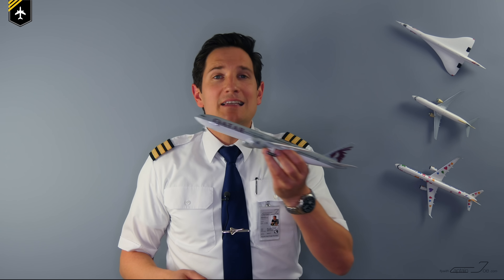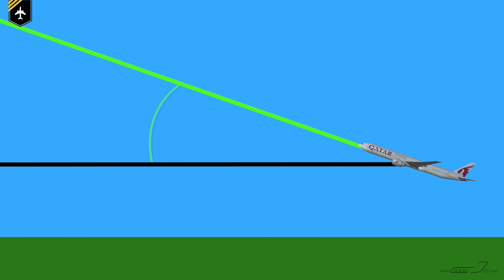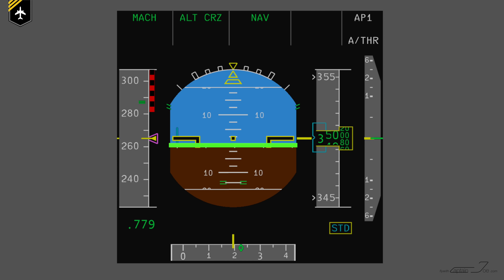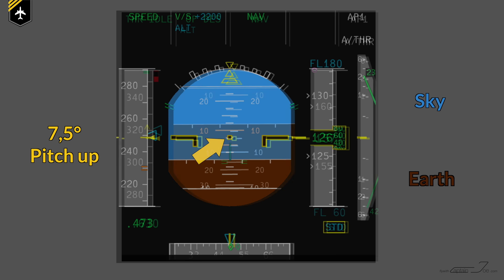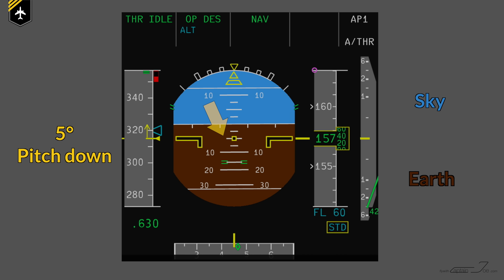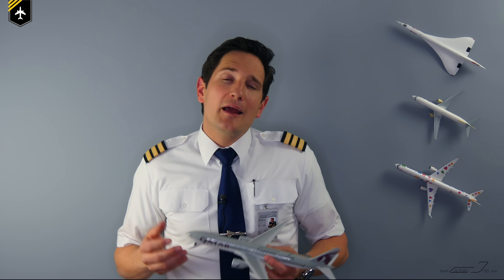Let's say this Boeing 777 is in a climb, so the artificial horizon would show a positive pitch-up attitude relative to the horizon — that's the pitch angle. Looking at the artificial horizon, the line separates the blue sky from the brown earth at zero degrees pitch. The lines above and below show the respective degrees of pitch, so here the plane is climbing at 7.5 degrees up, and here it's in a descent with 5 degrees down pitch angle.